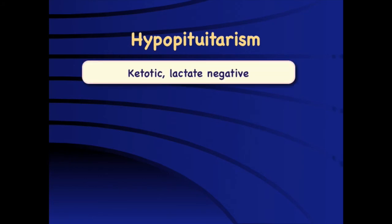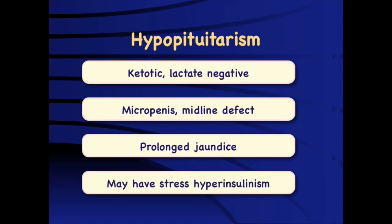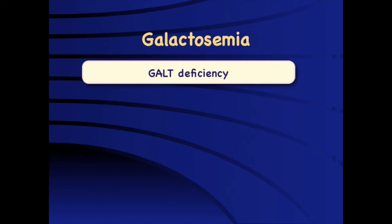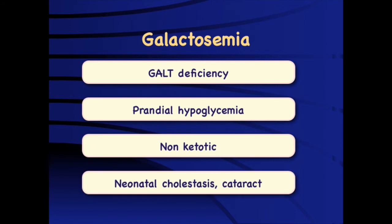Hypopituitarism should be considered in every child with early onset hypoglycemia, particularly when ketones are present, especially in the setting of micropenis, midline defects, and prolonged jaundice. Many of these children will actually have stress hyperinsulinism, so insulin levels may be detectable, causing confusion. However, if these children are ketotic, the insulinism is actually secondary to stress, and the primary cause is growth hormone plus cortisol deficiency. Galactosemia should be considered in individuals with prandial hypoglycemia — hypoglycemia immediately after feeds — typically presenting between two to six weeks of life with failure to thrive, abdominal distension, diarrhea, and possibly neonatal cholestasis or cataract.